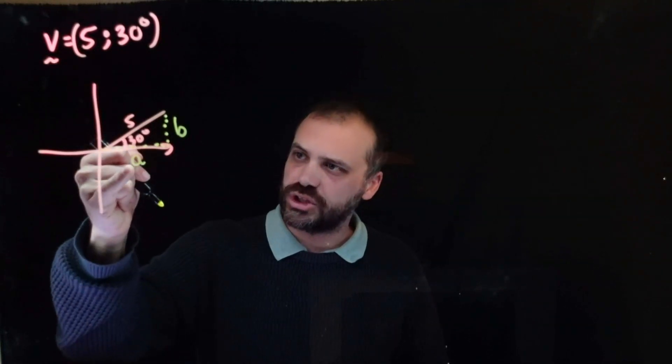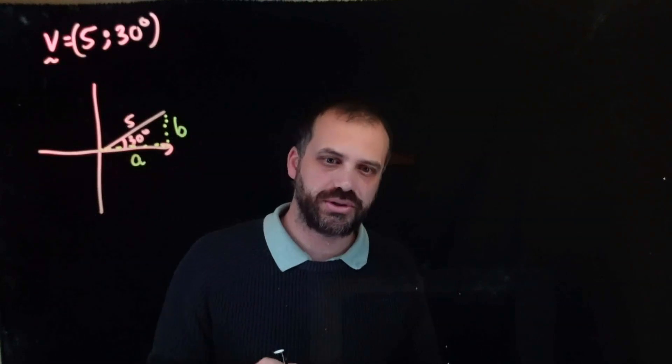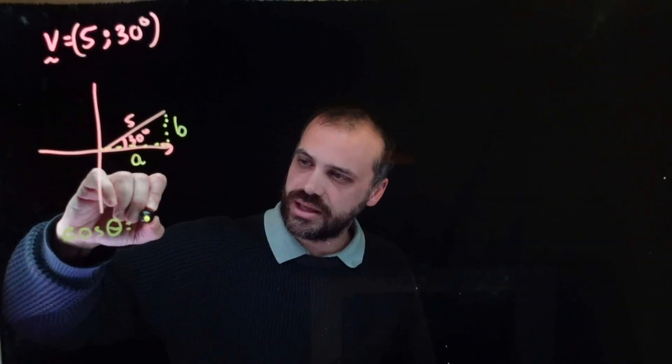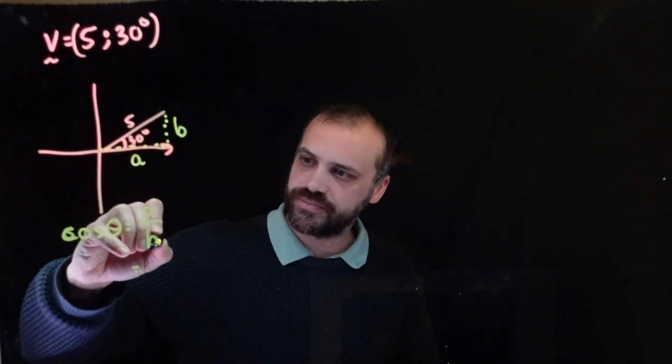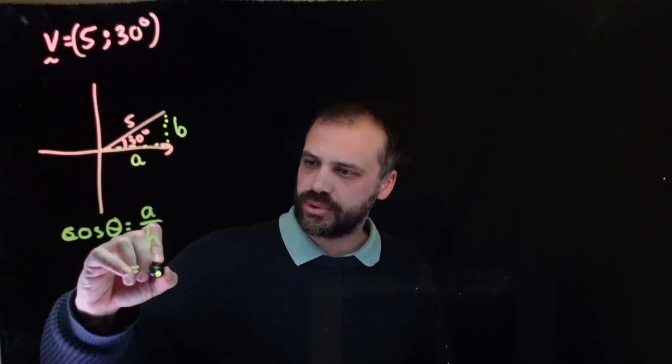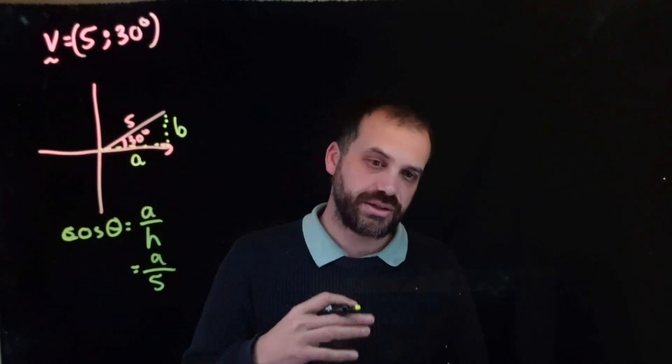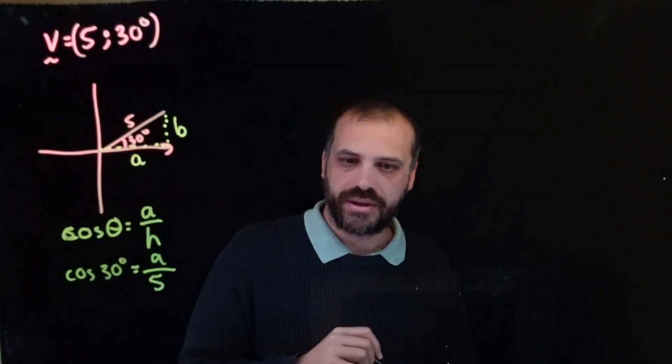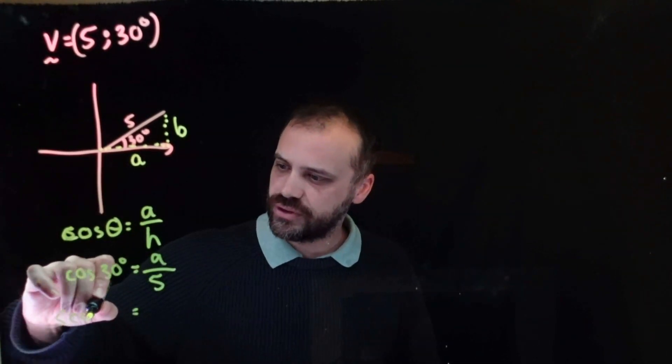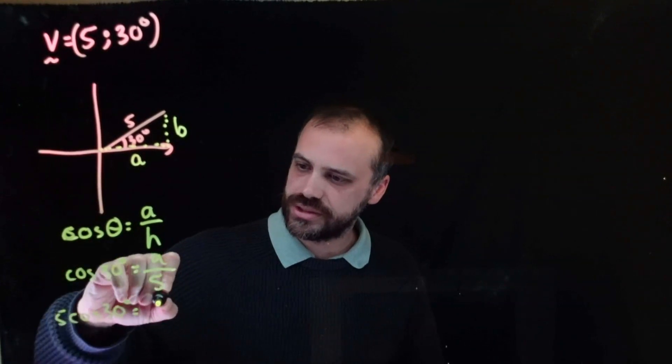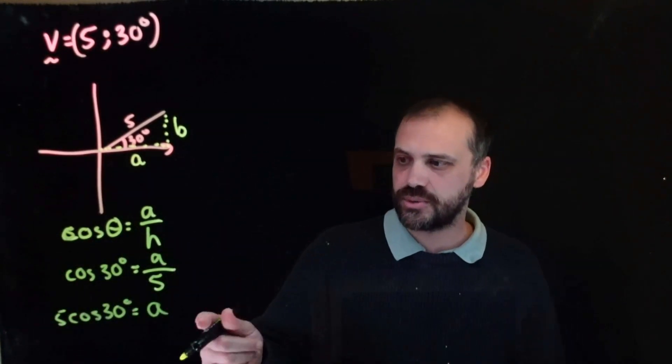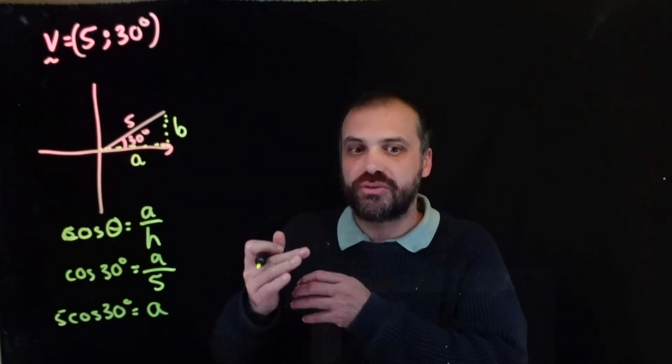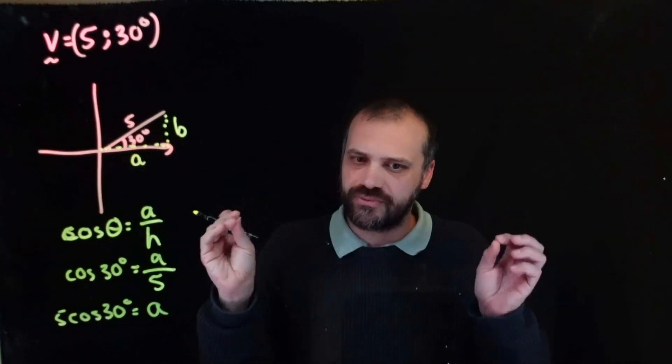Adjacent hypotenuse. So, cos theta equals adjacent over hypotenuse. What's the hypotenuse? The hypotenuse is 5. What's the adjacent? I don't know, that's the thing I want to know. And angle? 30 degrees. I can rearrange that to 5 cos 30 degrees. And that is going to be equal to the value of a. I'm going to stop there because it's very useful information. We're going to be able to generate a very nice, neat, awesome formula from it.